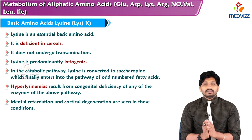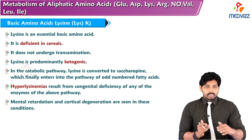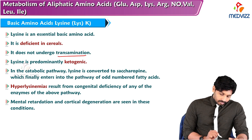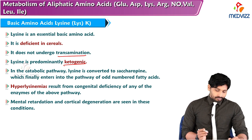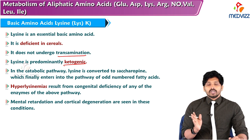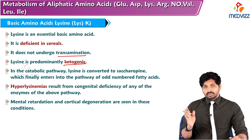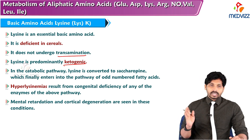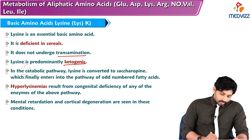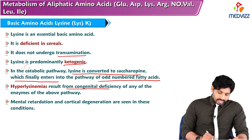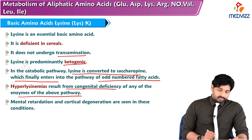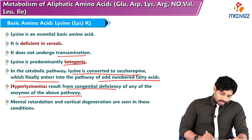Lysine is an essential basic amino acid. It is deficient in cereals. It doesn't undergo transamination, as like proline. Lysine is predominantly ketogenic in nature — the metabolic fate of lysine ends up in ketogenic substances. In the catabolic pathway, lysine is converted to sacropine, which finally enters into the pathway of odd number of fatty acids. Hyperlysineamias result from congenital deficiency of any of the enzymes of the above pathway, and mental retardation and cortical degeneration are seen in these conditions.